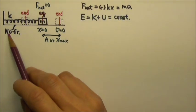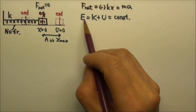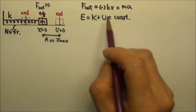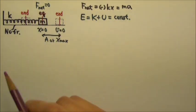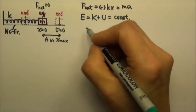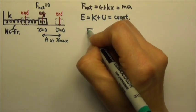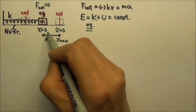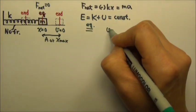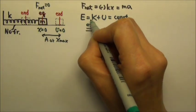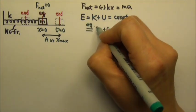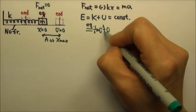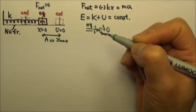Because there is no friction to take energy away, the mechanical energy K plus U is constant the entire time when the box oscillates. At the equilibrium position, because the spring is relaxed, there is no energy stored in the spring, and that means we have the maximum kinetic energy — so the speed is a maximum there.